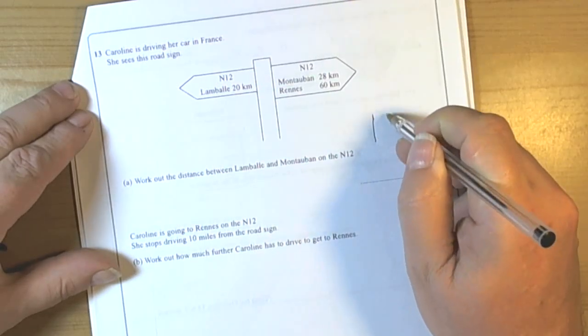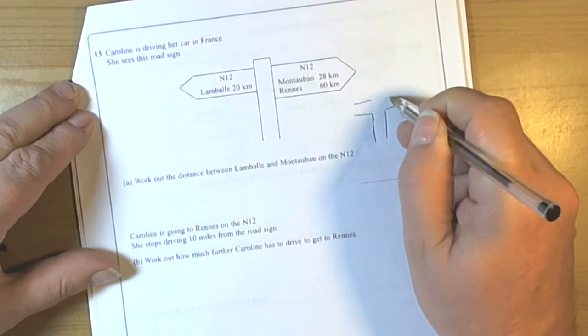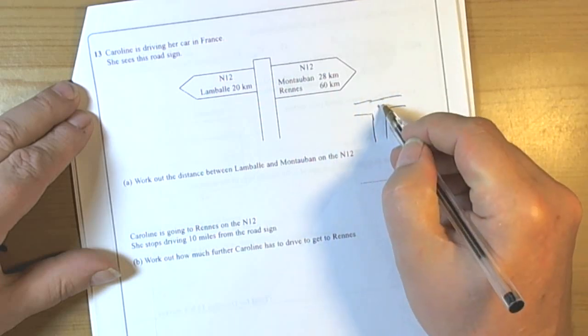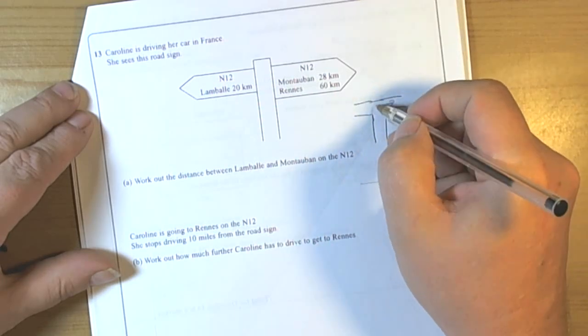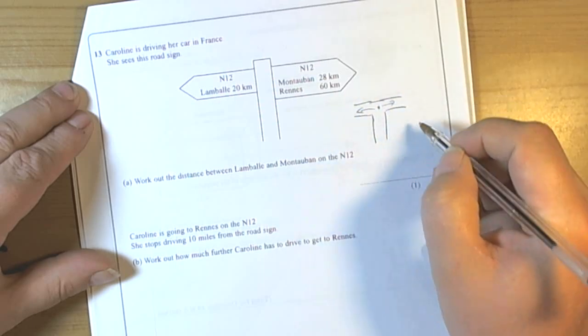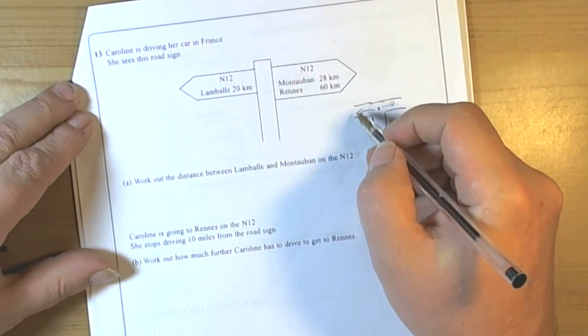So we've got to imagine what's going on here. We're coming to a junction and we can go that way to Montserban and Marans, and we can go that way to Lambelle. It wants the distance between Lambelle and Montserban.